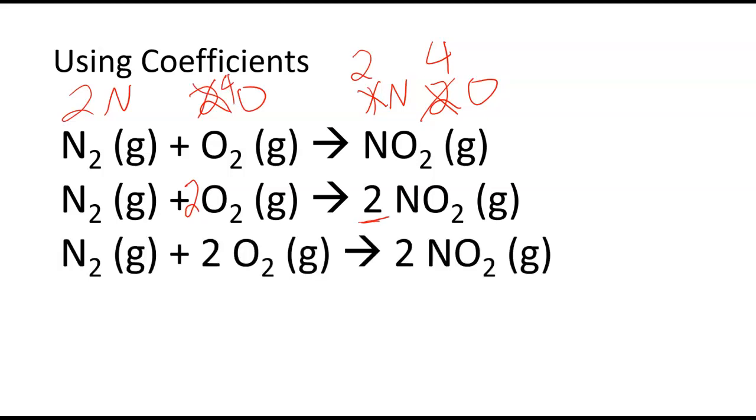So my final equation, where I've got two nitrogens and four oxygens on both sides. Always go back and double-check. Two nitrogens here, four oxygens, two nitrogens, four oxygens. You do want to make sure and double-check yourself. That way, if you do get off in any area, you can correct that.